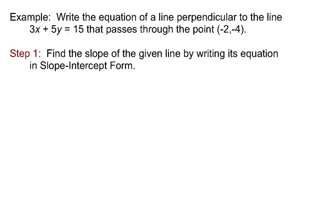So with all that said, let's jump in and give this a try. Write the equation of a line perpendicular to the line 3x plus 5y equals 15 that passes through the point (-2, -4). I'm going to propose four steps. The first step is this: find the slope of the given line by writing its equation in slope-intercept form. Slope-intercept form again looks like this, and I can get any linear equation in that form by solving for y.